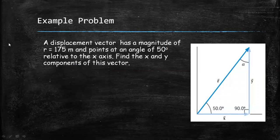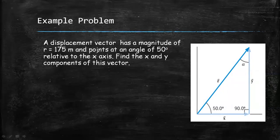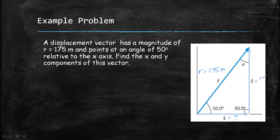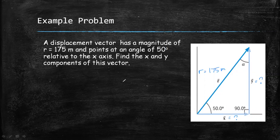A displacement vector has a magnitude of 175 meters and points at an angle of 50 degrees relative to the x-axis. Find the x and y components of this vector. We are given r equal to 175 meters, and we are looking for the magnitude of the x component and the magnitude of the y component. To solve for x and y components, we are going to use trigonometric functions.